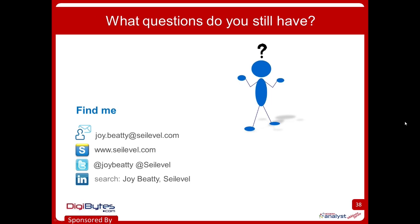There was a question from John about the data flow diagram: is the external entity only outside the company or can it just be outside the scope of analysis? It really does not have to be outside the company at all. It's really just an external entity meaning it's somebody that's not part of the system themselves. So it could be that you have an internal user interacting with the system — absolutely, you would call that an external entity on your data flow diagram.